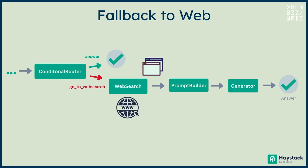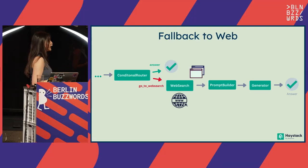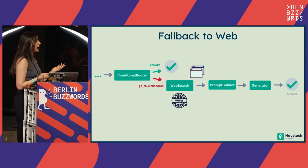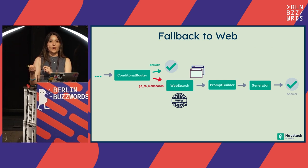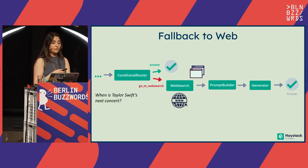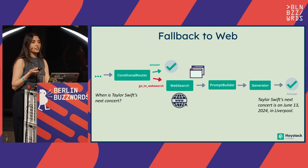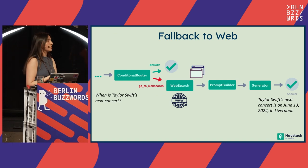Now we know how the conditional router routes the query to the relevant branch. I implement a web search using the web search component — it goes to the web, finds some relevant information, and returns that as documents, just like a retriever but from a different source. Then the rest is just like RAG: prompt builder gets the relevant documents and user query, and generates the answer with the generator. Now when I ask about this information, instead of saying it couldn't find anything, it can go check the web and find the next concert of Taylor Swift.